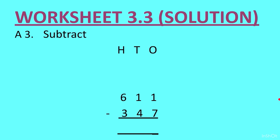Question 3: 611 minus 347. In the ones column: 1 minus 7 — we cannot do that. Borrow from the neighbor. We have 1 in the tens place, cut it, write 0, and bring the 1 here — 1 ten becomes 10 ones, plus the 1 already there, gives 11 ones. Write 11 on top. 11 minus 7 is 4. Now the tens column: 0 minus 4 — cannot subtract, so borrow from hundreds. Cut 6, write 5, cut 0, write 10. 10 minus 4 is 6, and 5 minus 3 is 2. The answer is 264.